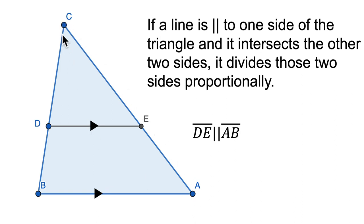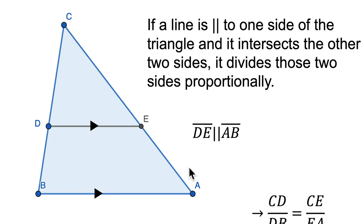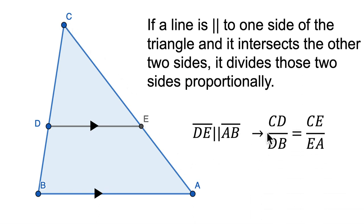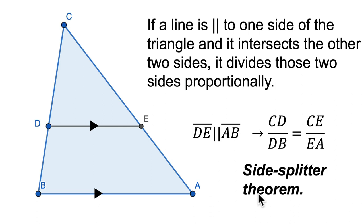It doesn't mean that length CD is equal to CE, or that DB is equal to EA. But it means the ratio of CD to DB is the same as the ratio of CE to EA. Isn't that really cool? So you want to think about why this makes sense, not just memorize it — if you're not thinking about why, you won't get much out of it.